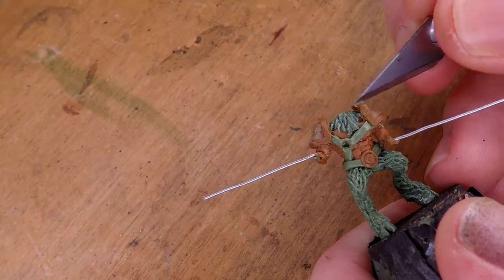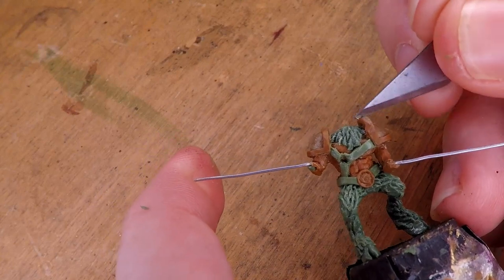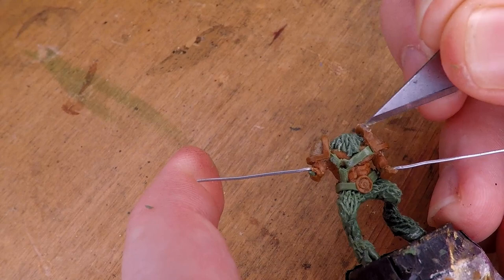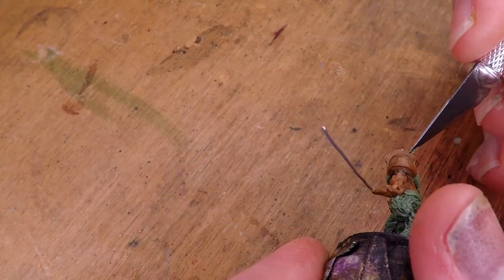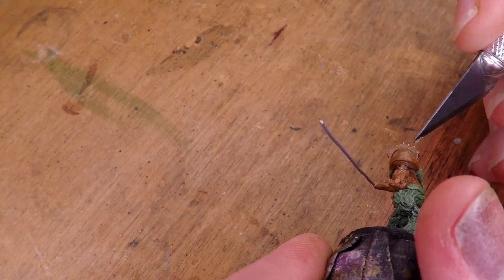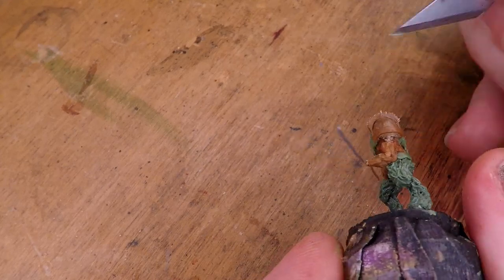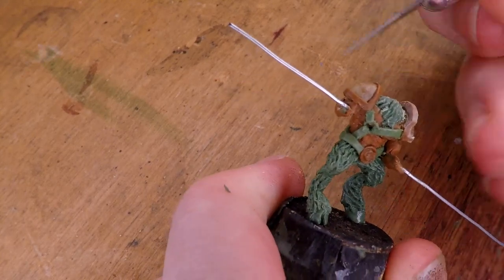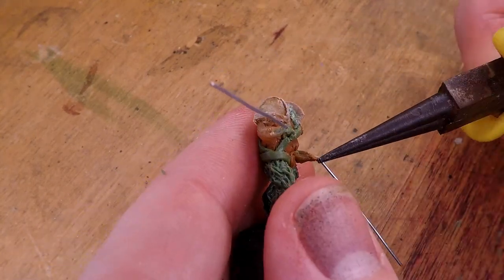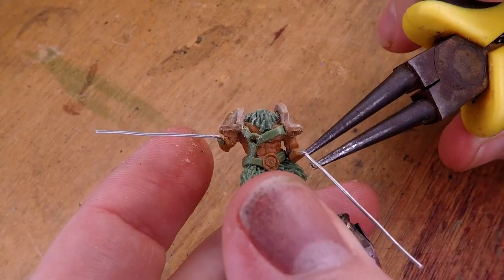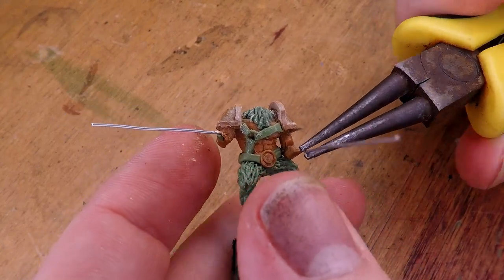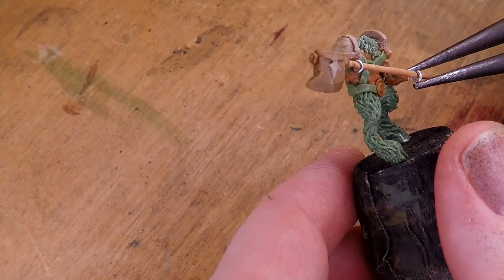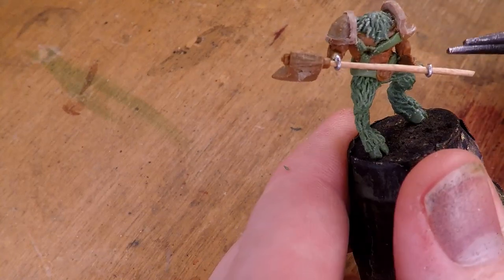But once the Milliput on the pauldrons have set I take my craft knife and I start scraping away at them the same way I did with the weapon. Focusing on getting all of the areas as flat as possible and the edges as sharp as possible. And you can start to see here just how effective this is for creating super sharp edges. With both of the pauldrons finished I take the wires on the hands and I curl them up so that they can hold the weapon that we had made earlier. Clamping down the wires onto the shaft of the axe to keep it in place.